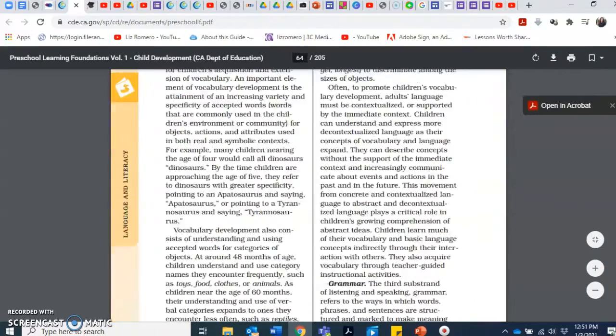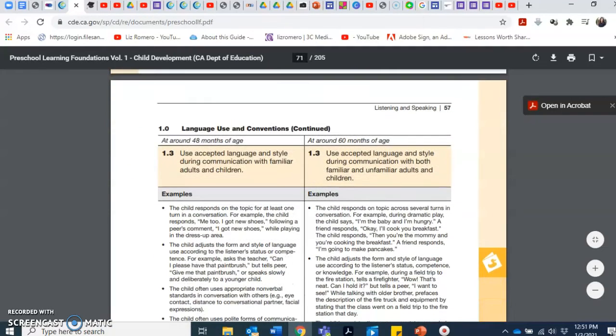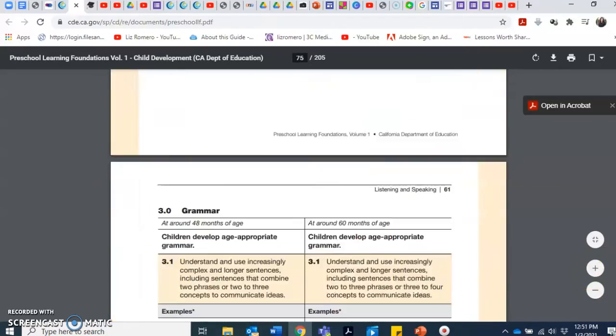At the beginning of the language and literacy, it describes it and then starts going into the foundations or standards. Here's a standard: language use and conventions. At around four years old, use accepted language and style during communication with familiar adults and children. That's the same at age five. Another example: use language to construct short narratives that are real or fictional. Can they tell stories?